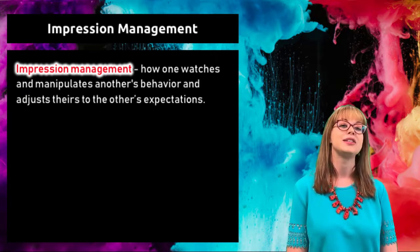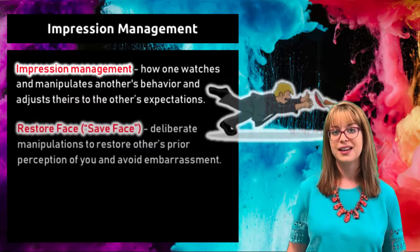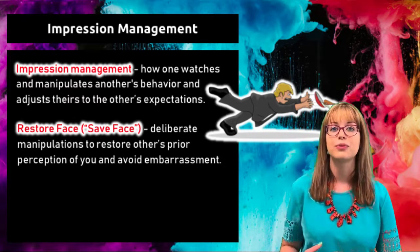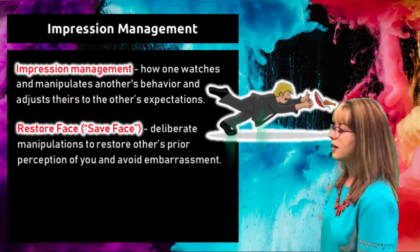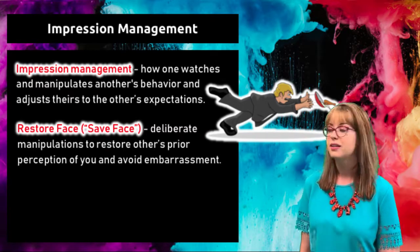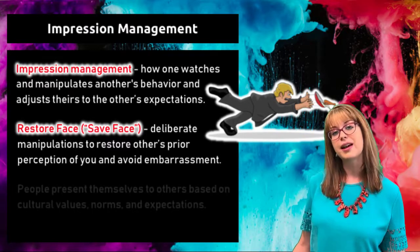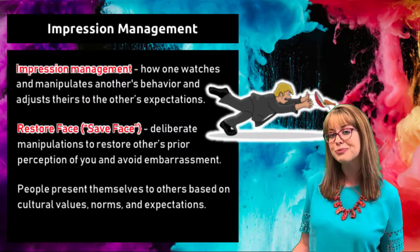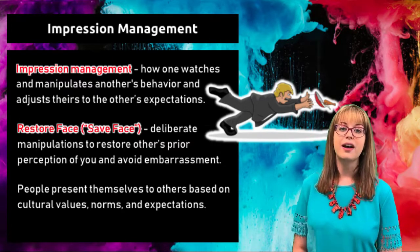Oftentimes when we're performing on front stage, something embarrassing happens that isn't planned, and we must go through a process called restoring face — providing an explanation or reason for your embarrassment. For example, if I'm walking down the street and I split my pants, I might say, 'This cheap brand — I should have invested in name brand pants.' Most of the time the audience helps you restore face, because it's awkward for everyone, so typically they go along with it.